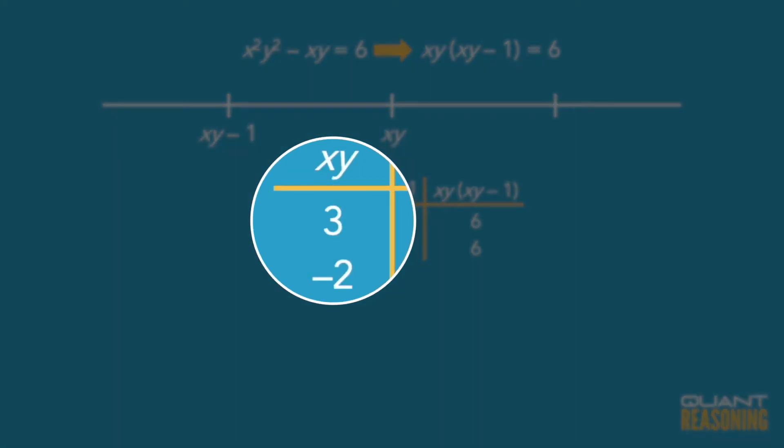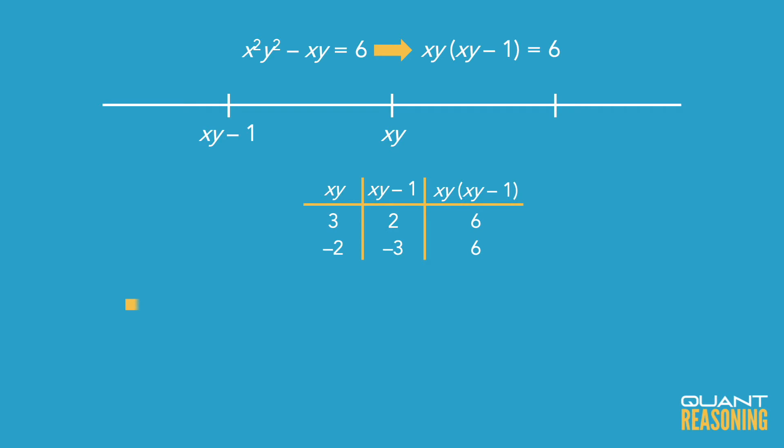So the big inference here is that the product xy is either 3 or negative 2. Now that we know that, they're asking for the value of y in terms of x. So if xy is 3, y would be 3 over x. And if xy is negative 2, then y would be negative 2 over x. So it looks like roman numerals 2 and 3 both work, and therefore the correct answer is e.